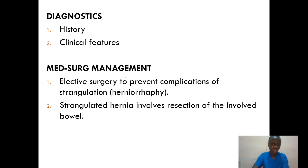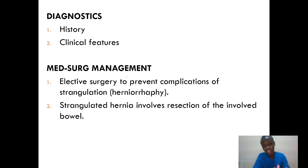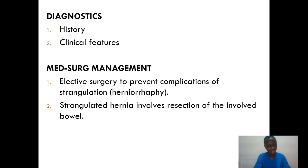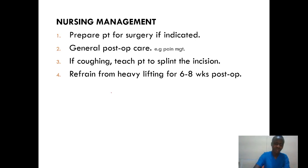For medical and surgical management: first, we need to do elective surgery to prevent complications of strangulation. Any sort of hernia that is not yet strangulated risks having its blood supply cut off over time, so elective surgery helps prevent that complication. For strangulated hernia, management involves resection of the involved bowel, because there has been a cutoff in blood supply and the tissue may become gangrenous — making that part no longer beneficial to the body.